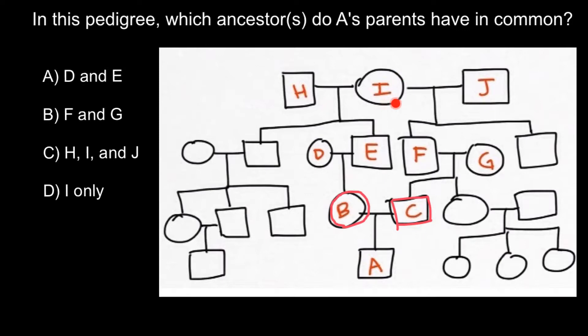The grandparents would be individuals I and H. Individual J would be genetically unrelated to individual B.